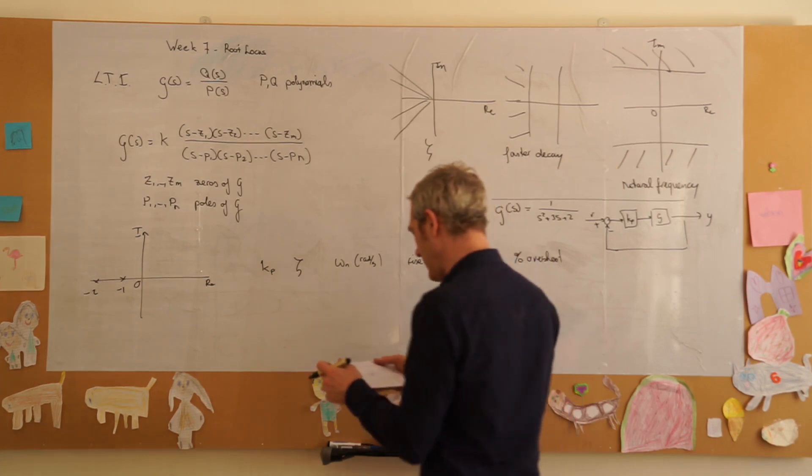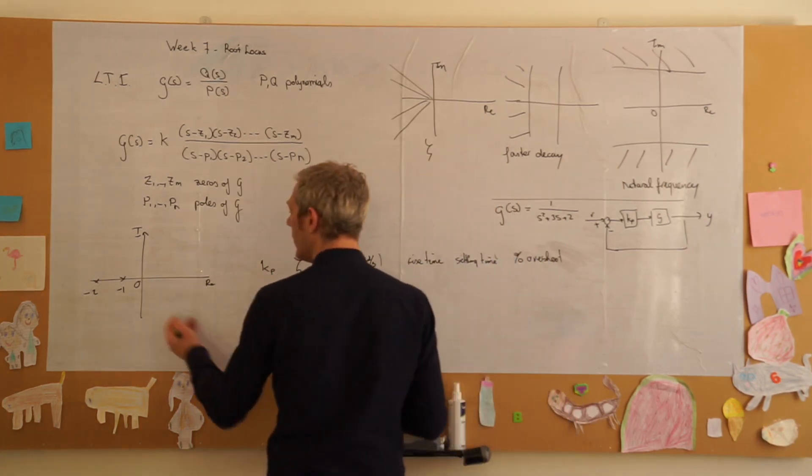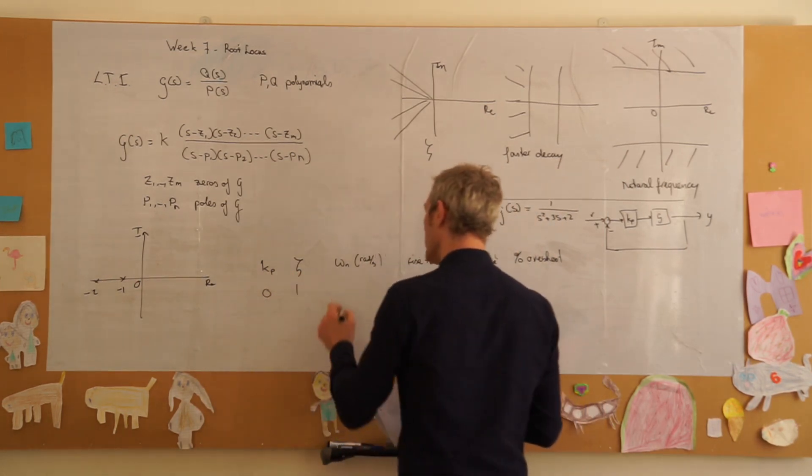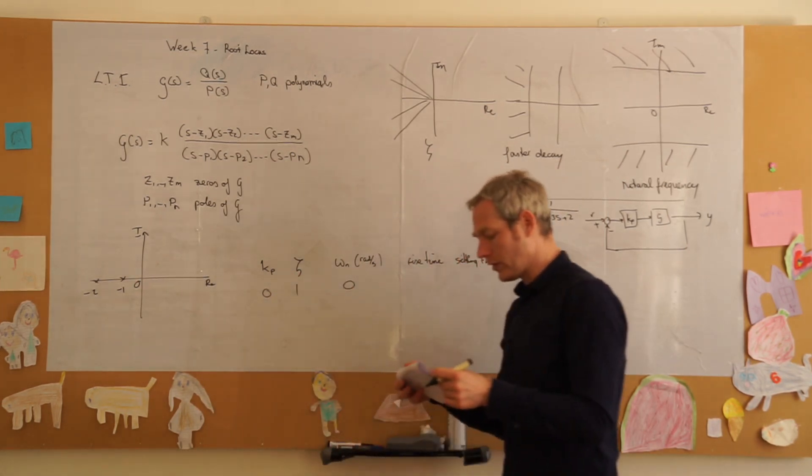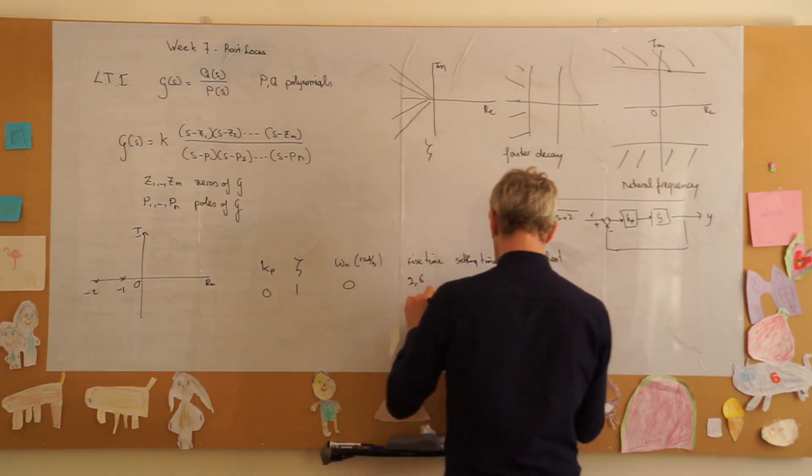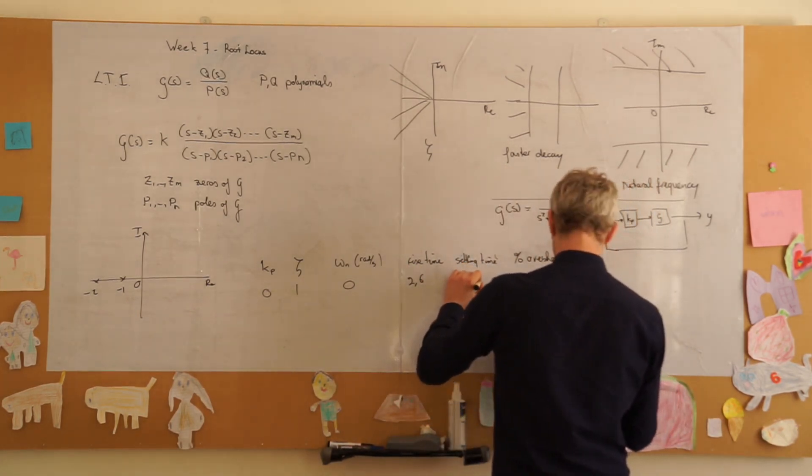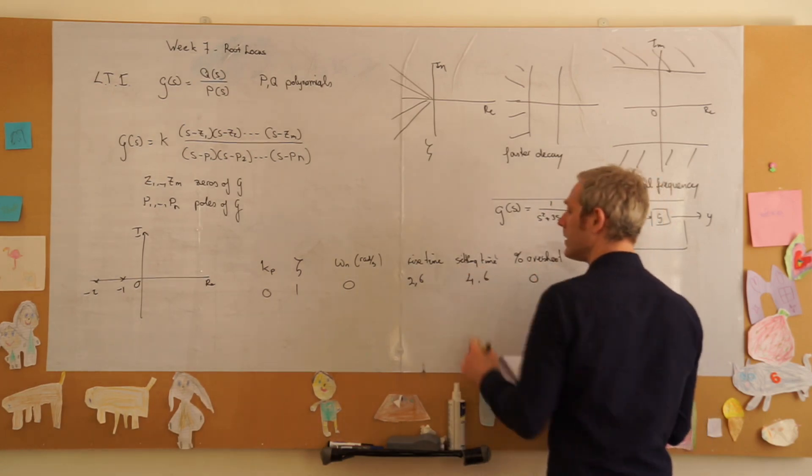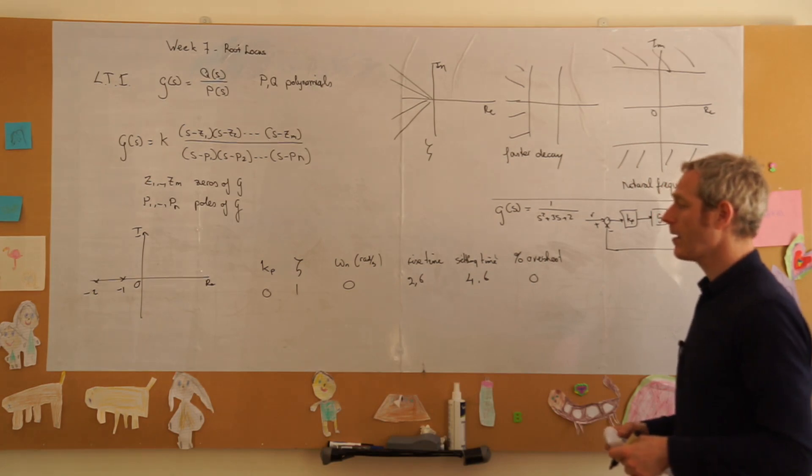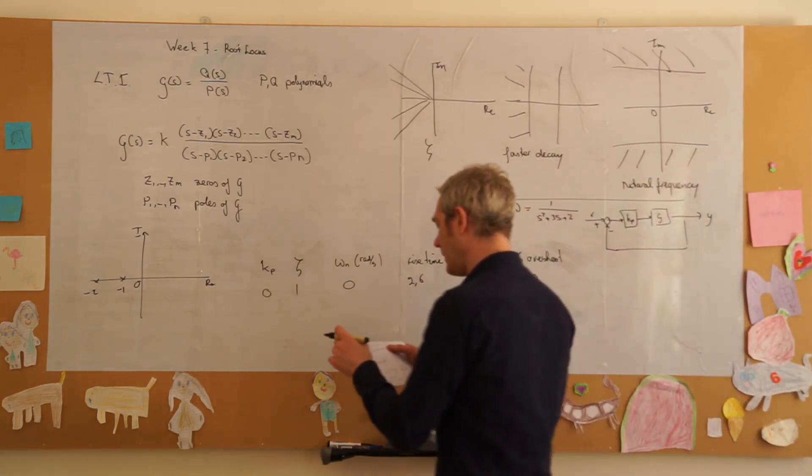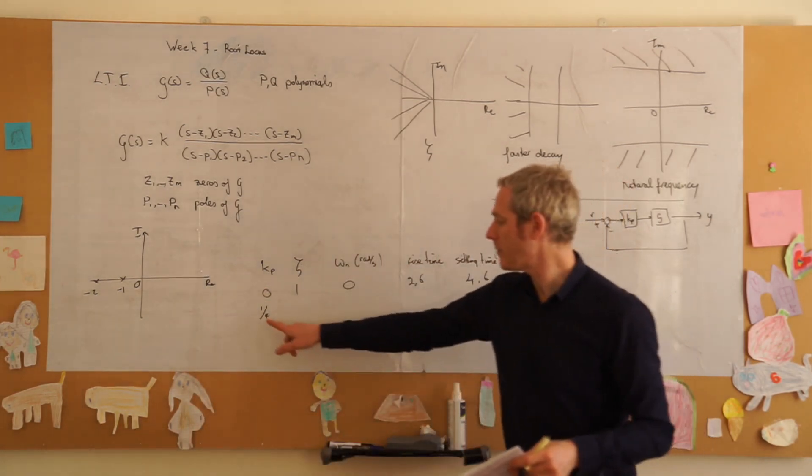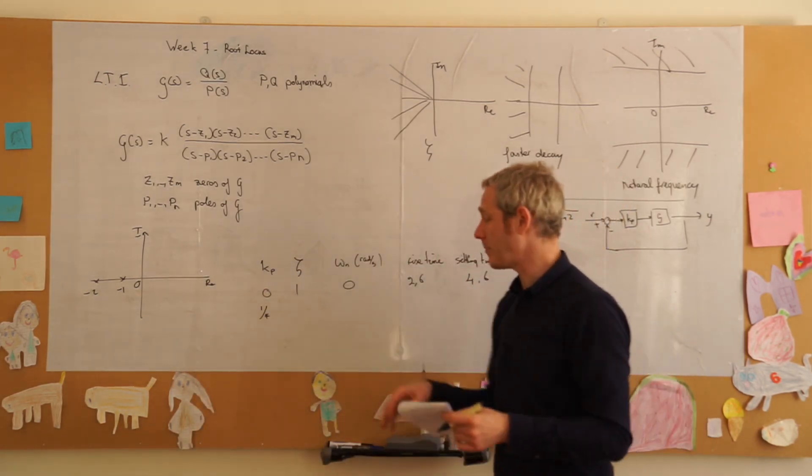And these are properties of our system that we really want to be able to control. Now, let's look at this system. If we take kp equal to zero, or very small, then the roots lie on the negative real axis, which means our damping ratio will be 1, and we have no oscillations. We also have a rise time of about 2.6 seconds, a settling time of 4.6 seconds, and we have no overshoot, because we have an overdamped system.